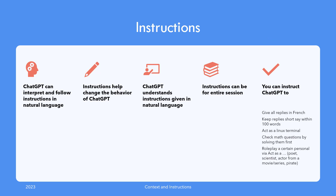Instructions are another critical part of ChatGPT vocabulary. ChatGPT is designed to interpret and follow instructions given in natural language. Instructions are a means to change the behavior and persona of ChatGPT. When two parties engage in a conversation, the persona of participants heavily influences the tone and demeanor of the conversation. Your conversation with your friends is nothing like a conversation with your boss or a customer. ChatGPT has a built-in capability to adopt a particular role or persona, achieved by using instructions, and it will remember your instructions for the rest of the session.